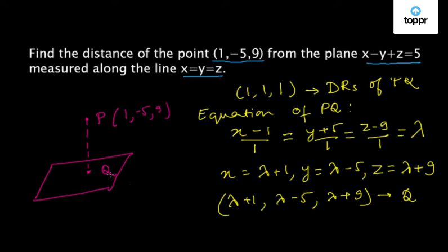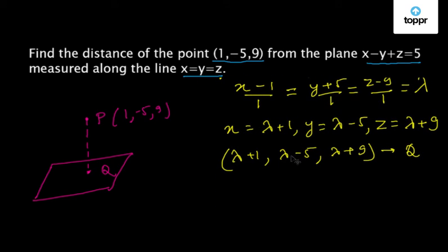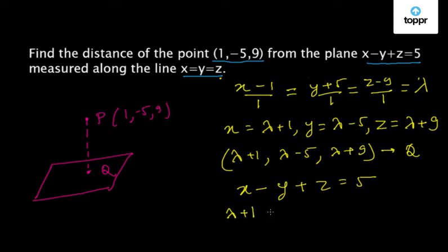Now this point Q also lies on the plane. So we can substitute the coordinates of Q in the equation of the plane. The equation of the plane is x minus y plus z equal to 5. Substituting the coordinates of Q, we get: lambda plus 1 minus (lambda minus 5) plus lambda plus 9 equal to 5. Solving this, we get lambda equal to minus 10.